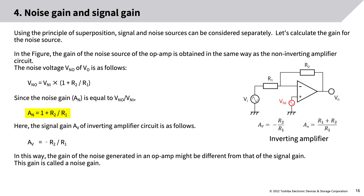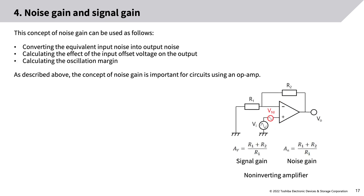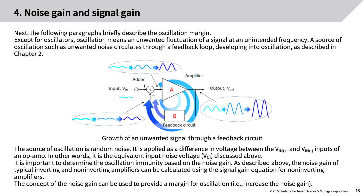Using the principle of superposition, signal and noise sources can be considered separately. The gain of the noise source is obtained in the same way as the non-inverting amplifier circuit. Since the noise gain AN equals VNO divided by VNI, and the signal gain AV of the inverting amplifier equals −R2/R1, the gain of op-amp noise may differ from the signal gain — this is called the noise gain. The noise gain concept is used for: converting equivalent input noise into output noise, calculating the effect of input offset voltage on the output, and calculating the oscillation margin.